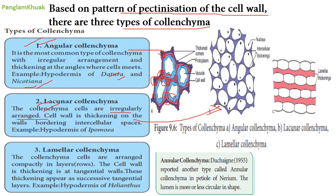Number two is lacunar colenchyma — the cells are irregularly arranged with the cell wall thickening on the walls bordering intercellular spaces. They have intercellular spaces with thickened cell walls and are found in the hypodermis of Ipomoea.